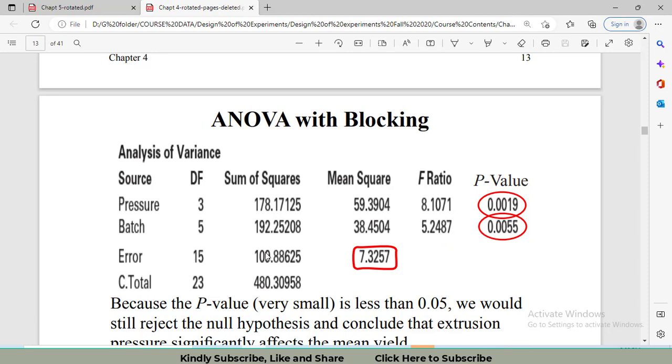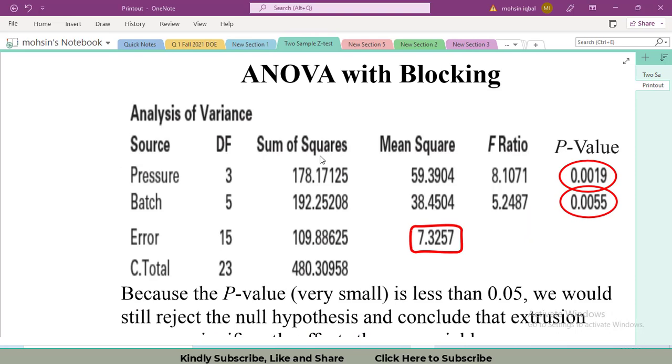Likewise, you can calculate the same value for batches using the same formula. Now we have to decide whether to reject the null hypothesis or fail to reject the null hypothesis. We can also call this F ratio value as F statistic or F naught value. I will go to the table of F distribution to calculate my critical values. I have taken alpha equals 0.05 in this problem.